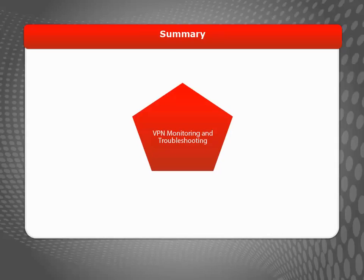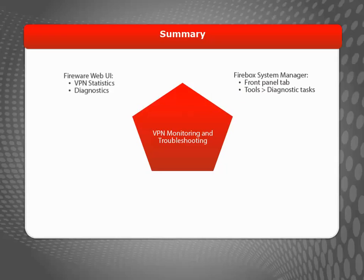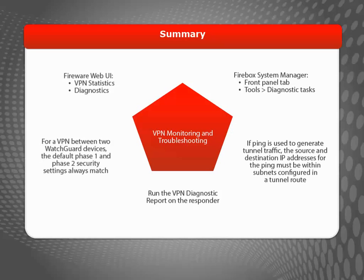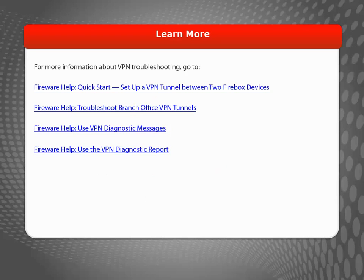If you have a BOVPN and need to troubleshoot any issues you might encounter, you can use either the Fireware Web UI or Firebox System Manager. Whichever tool you use, keep these tips in mind: Run the VPN Diagnostic Report on the Responder to get the most detailed VPN diagnostic and log messages. For a VPN between two Firebox devices, the default BOVPN Phase 1 and Phase 2 security settings always match, so these default settings are a good starting point for setting up a new VPN. If you use ping to generate traffic through a VPN tunnel, make sure that the source and destination of the ping are both on subnets defined in the tunnel route. For more information about the VPN Diagnostic Report and VPN troubleshooting tips, see the WatchGuard website.